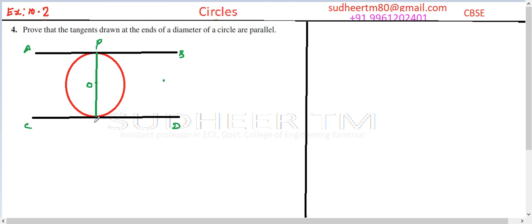Let's take here PQ as the diameter of a circle with center O, and AB and CD are the two tangents drawn at P and Q respectively.